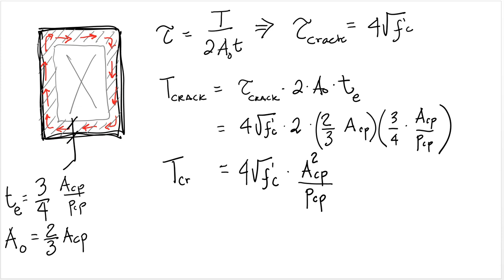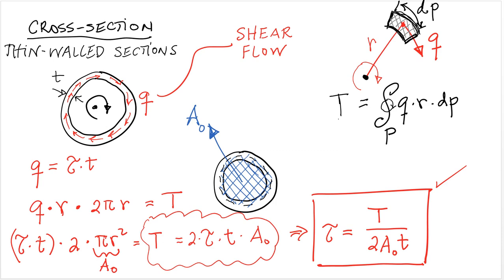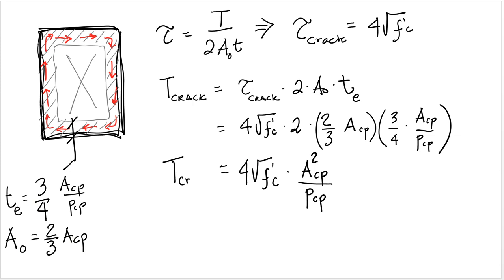And the area enclosed by the center line of that perimeter is 2/3 of the area enclosed by the outer perimeter. So if we take these two equivalent terms and substitute them into the formula that we've just derived, this formula right here, T divided by 2A₀t, and select the cracking shear stress as 4 times the square root of f'c, we can compute what the ACI calls the cracking torsional moment.